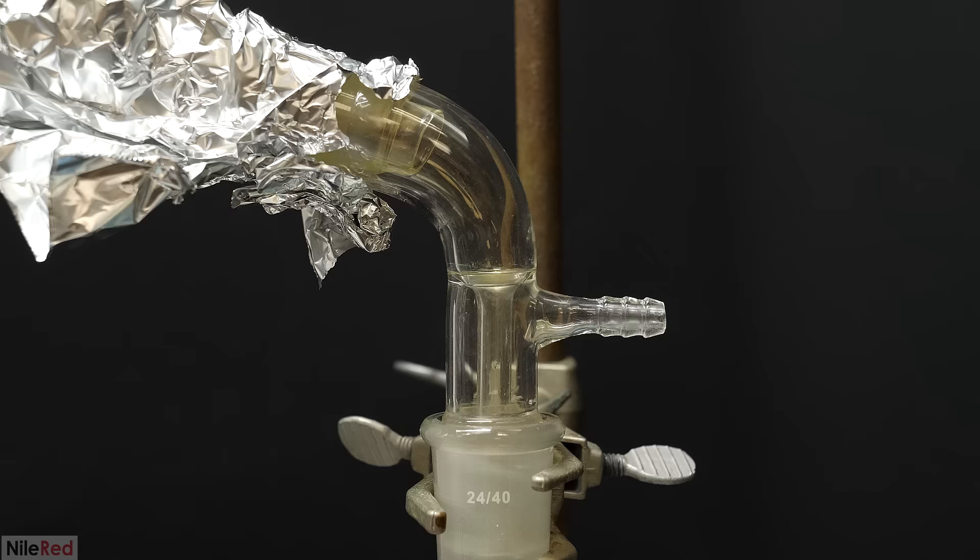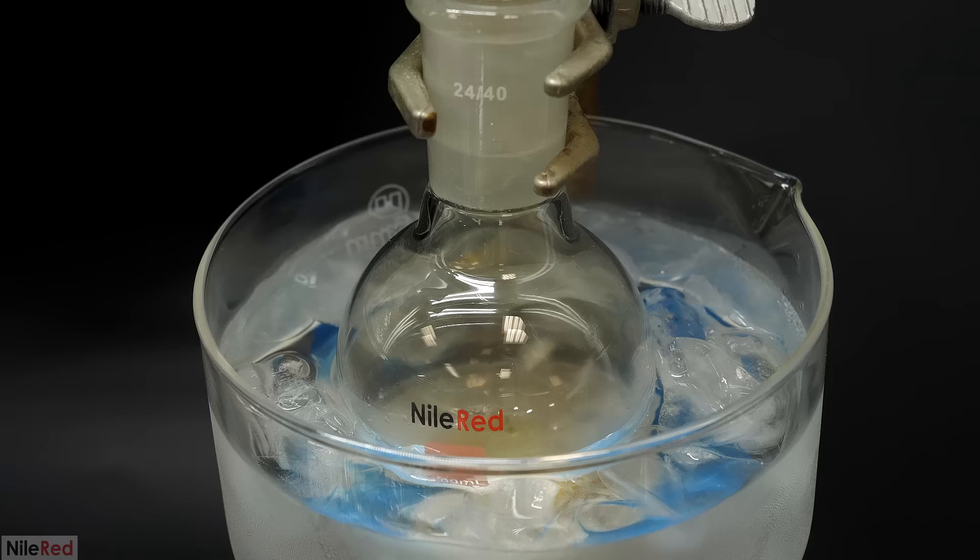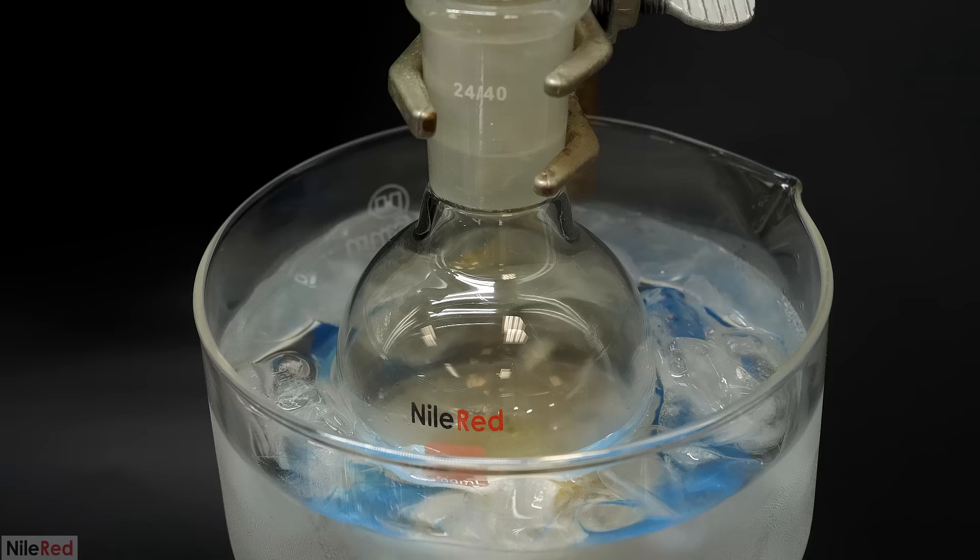The major consequence of this is that some of it dissolves into the nitric acid and gives it a slight yellow color. In theory, there is a way to get rid of it and to have completely colorless acid. But for most applications, as far as I know, it's not really an issue.